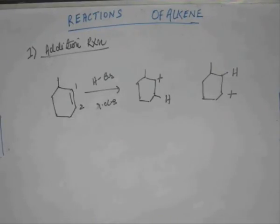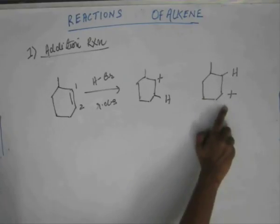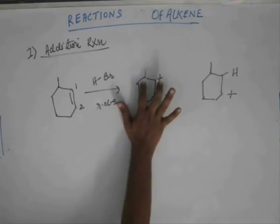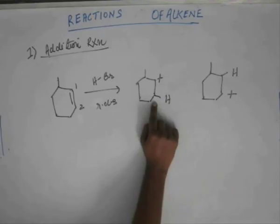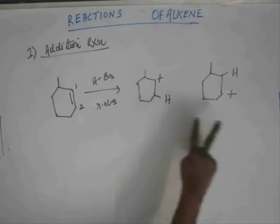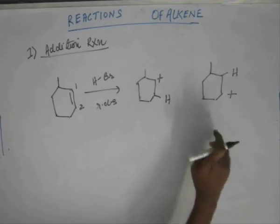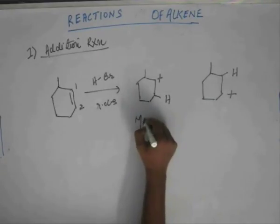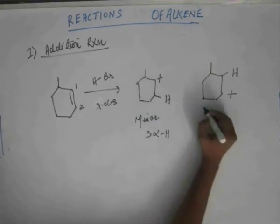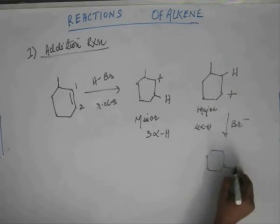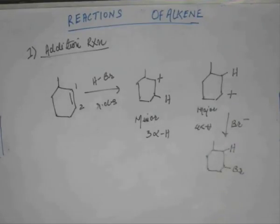You have to judge which carbocation is most stable, and you can easily judge based upon hyperconjugation. In one case there are four hyperconjugating structures — four alpha hydrogens, two on each side. In the other case, there is only one hydrogen on the three-degree carbon and two hydrogens on the two-degree carbon, giving three alpha hydrogens altogether. So the carbocation with four alpha hydrogens is more stable and its corresponding product is the major product. In step two, Br⁻ comes in and gets attached to the C⁺.